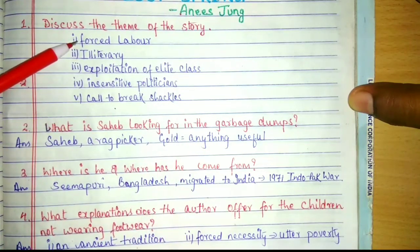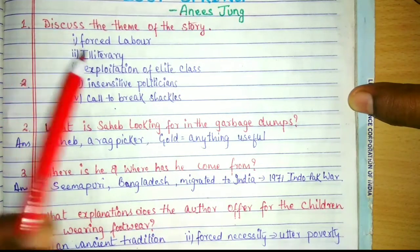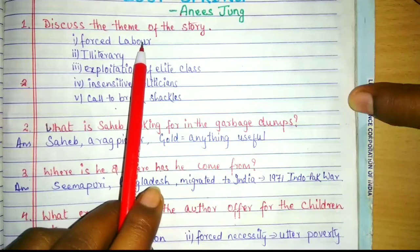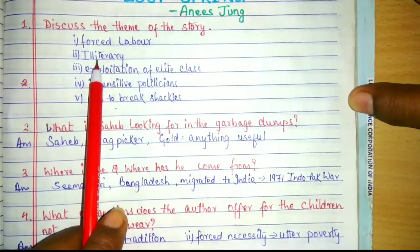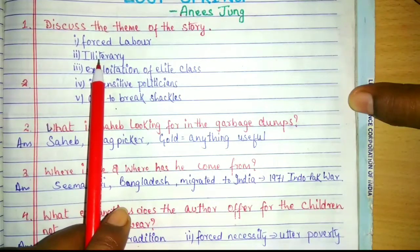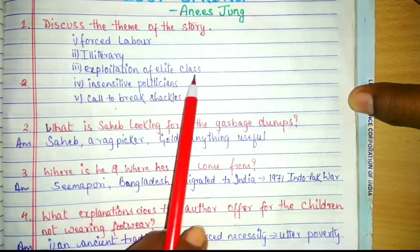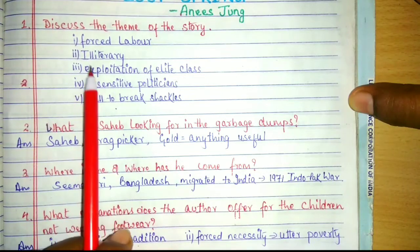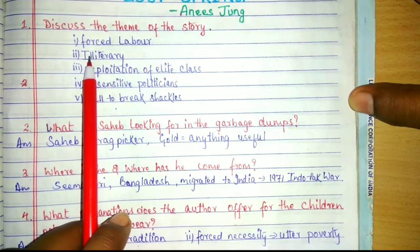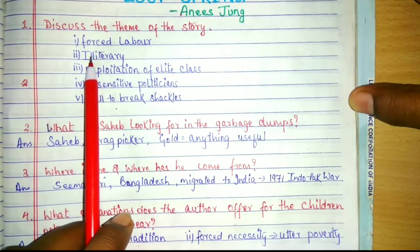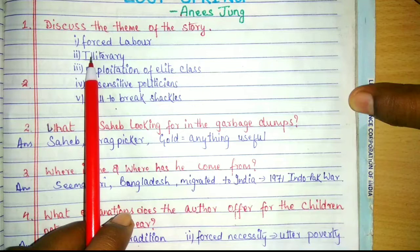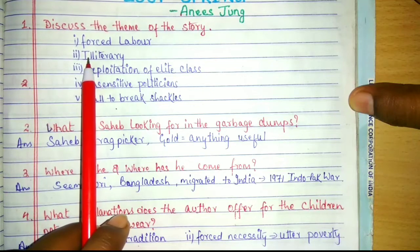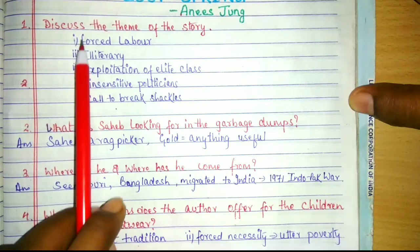Here children were forced to work because they were illiterate. Why were they illiterate? Because elite people did not want them to learn. They exploited them so that they remained under poverty throughout their life, and therefore they could not get education and had to work.